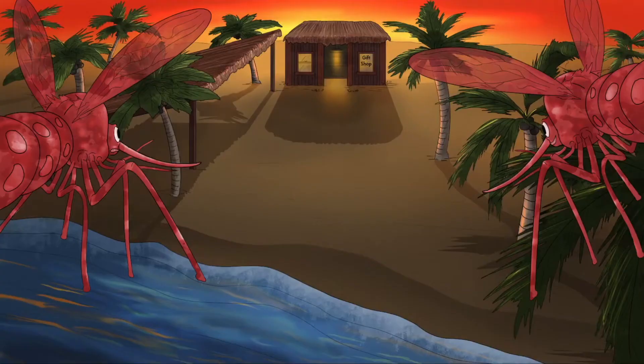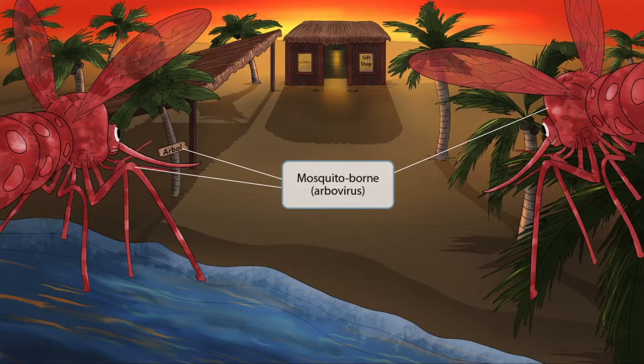Our story starts on the beach of a tropical island. We are going to see this island from the perspective of some blood-sucking mosquitoes. These mosquitoes are full of blood, as you can tell by their red bodies, but they're not satisfied — they want some more blood of the tourists here. These mosquitoes will help you remember that Zika virus is mosquito-borne, which by definition also means it is arthropod-borne, or an arbovirus.